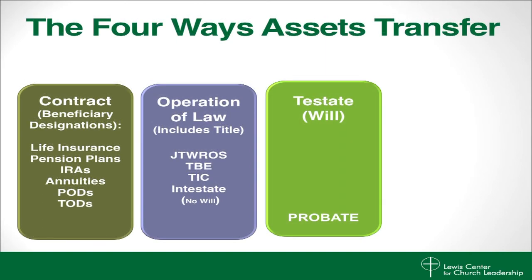The third way assets are transferred upon death is through a will. A will is a legal written document that details the terms on how a person's estate should be managed and distributed after his or her death. It is a public document at death. A review is necessary if you move to a different state, as each state has its own laws concerning wills.